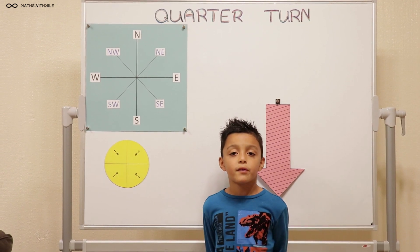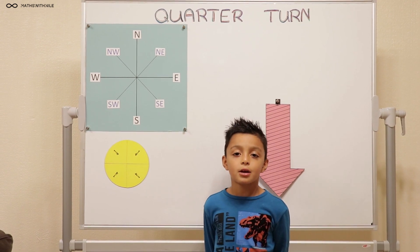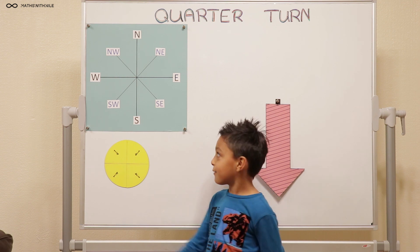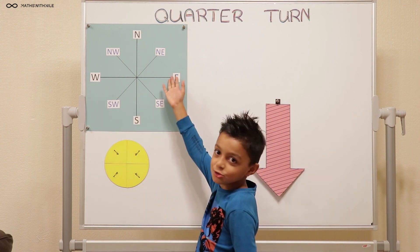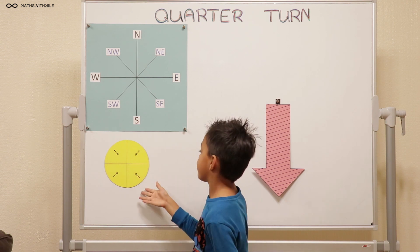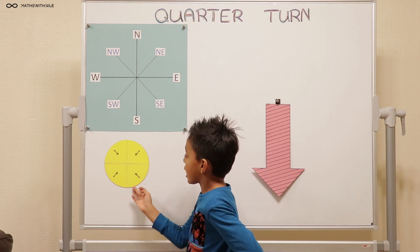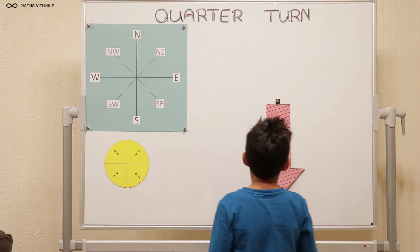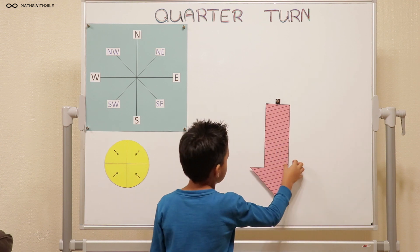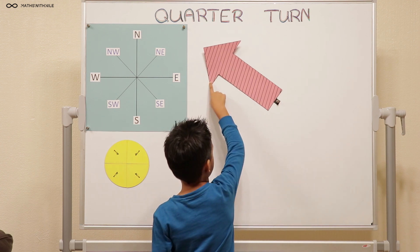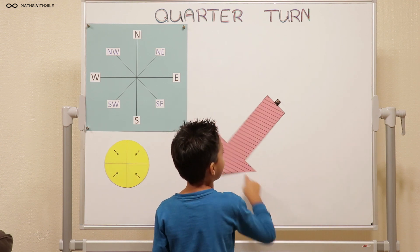Hello, welcome to Math with Niall. Today we're going to be doing quarter turns. Hi Niall, what do you have on the board behind you? I have some cardinal directions, I have some quarter fractions that make it one whole, and I have a big arrow that I'm going to be moving around.